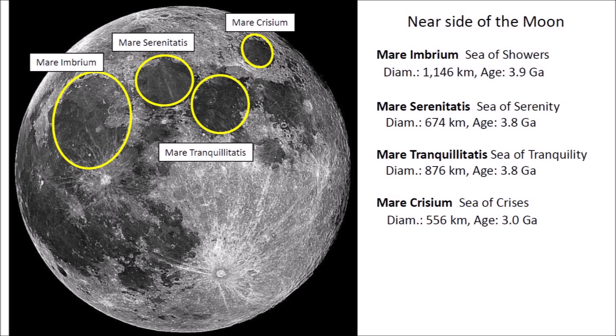That asteroid was about the size of the state of West Virginia. Tycho Crater is one of the most prominent craters on the Moon. It appears as a bright spot in the southern highlands with rays of bright material that stretch across much of the Moon's near side. Tycho's prominence is not due to its size — it has a diameter of 85 kilometers — but because it formed relatively recently, about 108 million years ago.